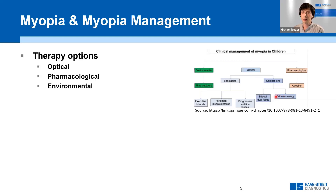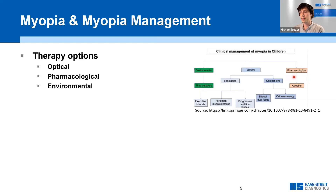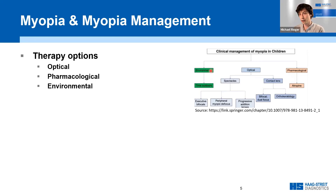Atropine is a pharmacological option to reduce eye growth, though there is controversy about the optimal dosage. There are also studies on the possibility of using therapies to lower intraocular pressure. Furthermore, changes in environmental factors can influence myopia progression — for example, the duration of exposure to sunlight or time spent outdoors — though questions remain about whether it's light intensity or light composition that matters.